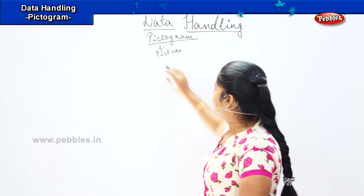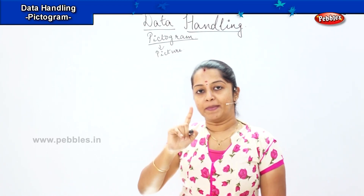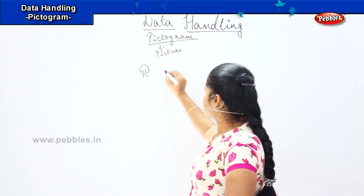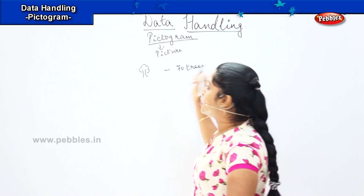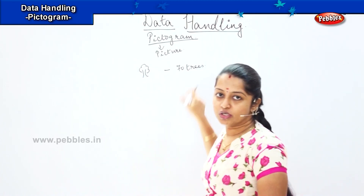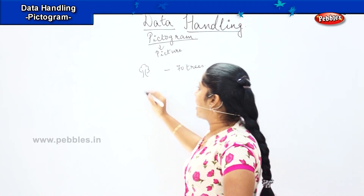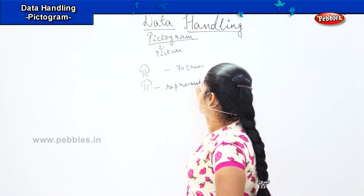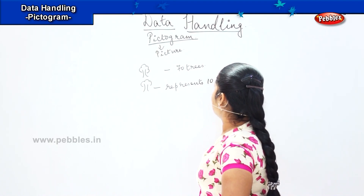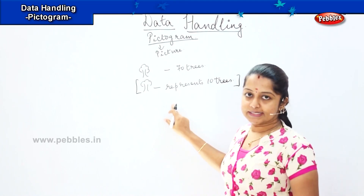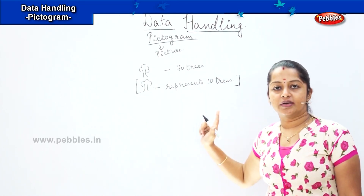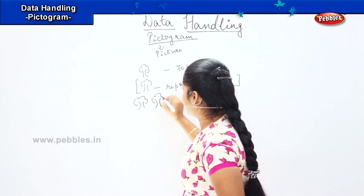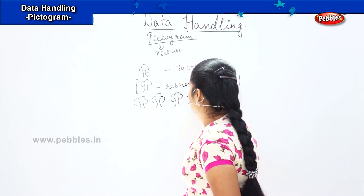For example, usually in a pictogram we denote one picture to represent some amount. If I mention a tree and I have to represent 70 trees, it is not possible to draw 70 trees on a small page. So in a pictogram, I will show one tree as representing 10 trees. So wherever you see this tree, one tree stands for 10 trees.